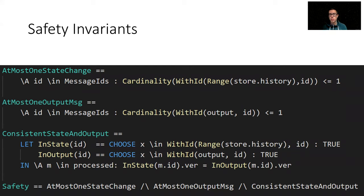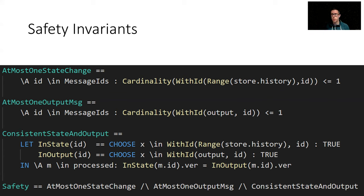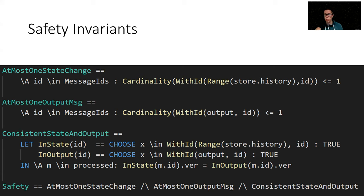The safety invariants — this is what we ended up with when it comes to safety, and it basically expresses the safety property which makes sure that for any logical message there is at most one change happening to the business store and at most one message being produced and sent to the output queue. Those are the first two parts — one on the top and one in the middle. Finally, the one called 'consistent state and output' says that if the message is fully processed, the version on which the business state was changed and the output message should be the same. Basically we make sure that those two pieces of side effects are consistent, in a way that they were produced by a business logic operating on the same version of the business state.